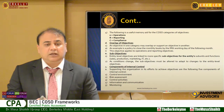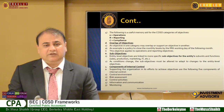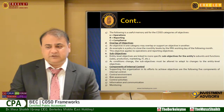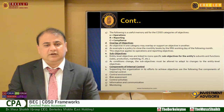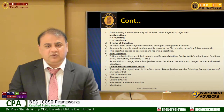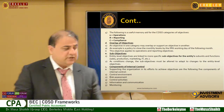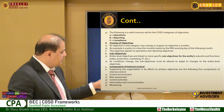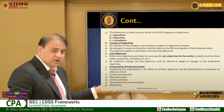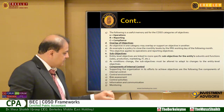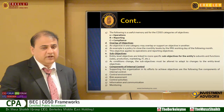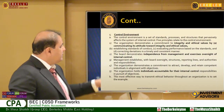Once we define what to control, we gather information and see how people communicate with each other, then we start monitoring — because without monitoring, there is no gain from having systems. So the components are: control environment, risk assessment, control activities, information and communication, and monitoring.